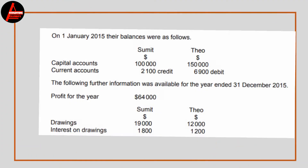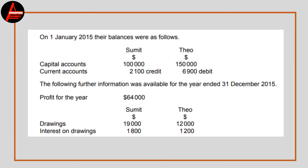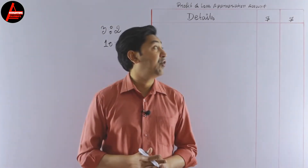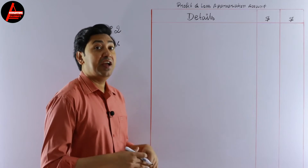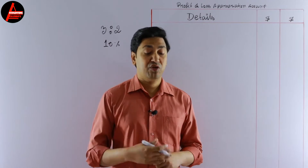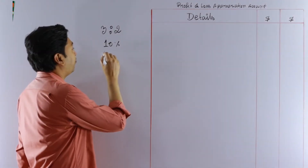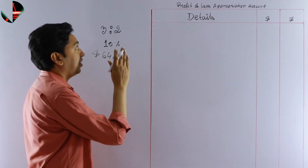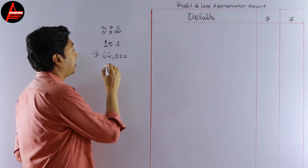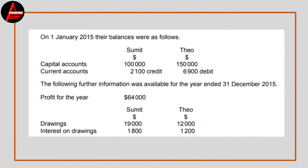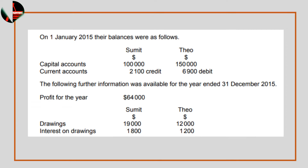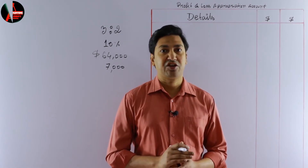On 1st January 2015, the capital balances were as follows — capital accounts and current accounts are given. For the year ending 31st December 2015: profit for the year is $64,000; salary of $7,000 for Sumit; drawings of $19,000 for Sumit and $12,000 for Dio; and interest on drawings of $1,800 for Sumit and $1,200 for Dio.